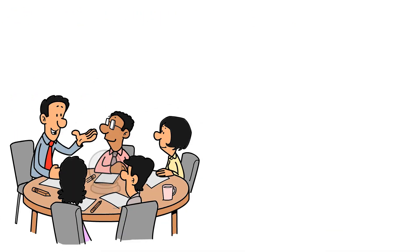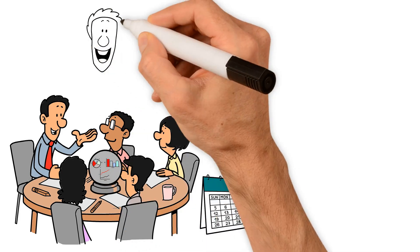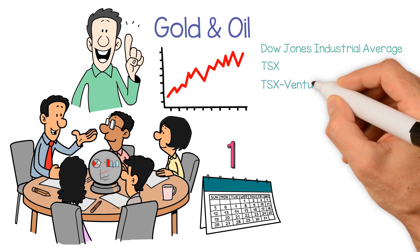Our team of financial stock pickers pull out their crystal ball once per month to make predictive calls on how key commodities such as gold and oil, as well as key indices such as the Dow Jones Industrial Average, TSX, TSX Venture, S&P 500 Small Cap Index, and others are likely to trade in the coming month.